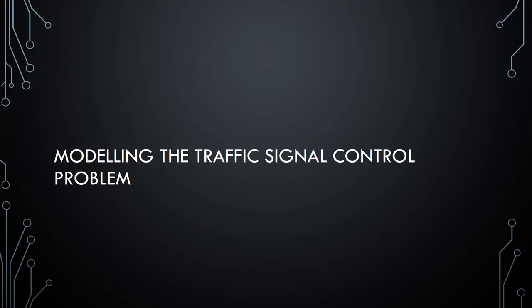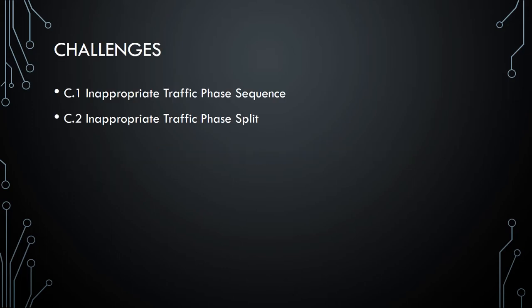Now how do we model this traffic signal control problem as a reinforcement learning problem? To start off, let's consider the challenges we have at hand: an inappropriate traffic phase sequence and an inappropriate traffic phase split, which we need to address.